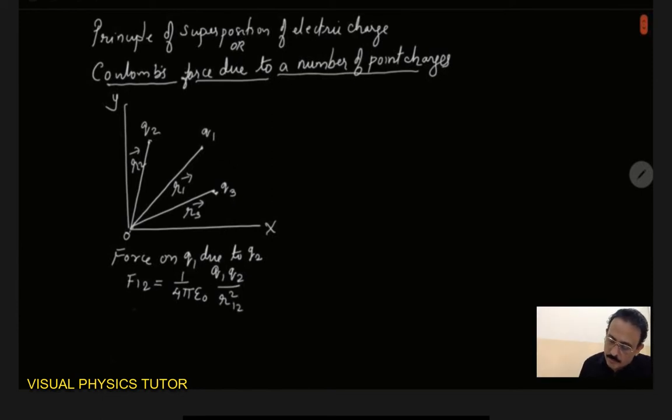So in vector form, this can be written as F12 is equal to 1 by 4 pi epsilon 0, q1 q2 by r12 square, r12 cap. Now the unit vector is in the direction of r12.